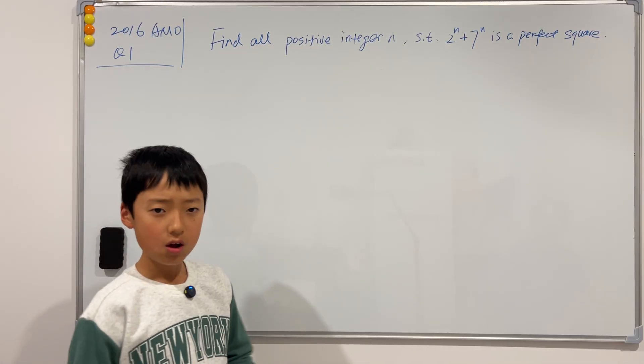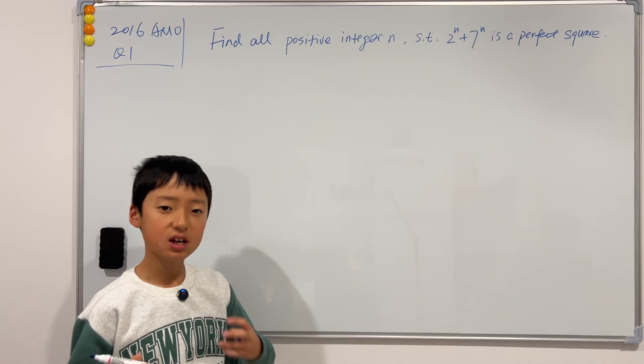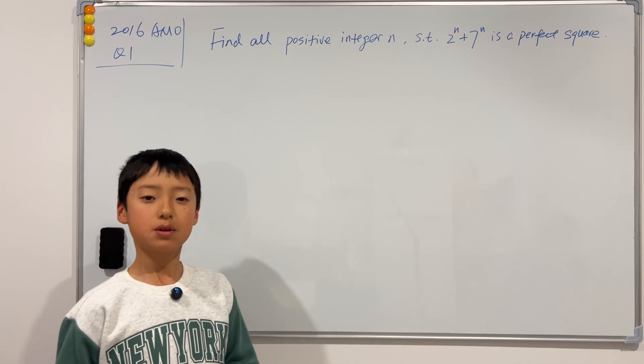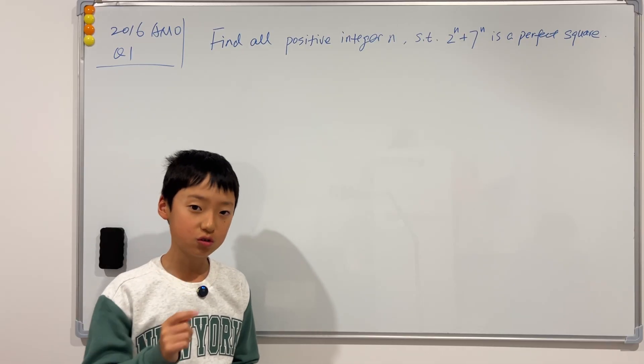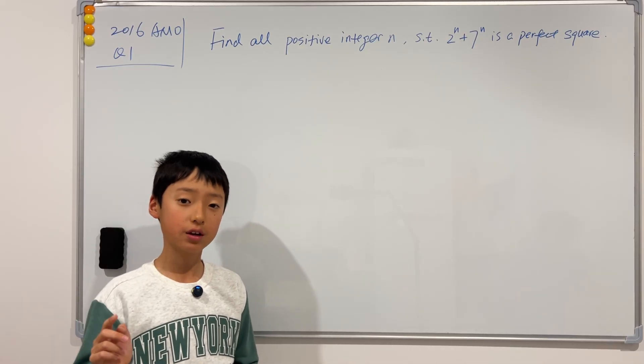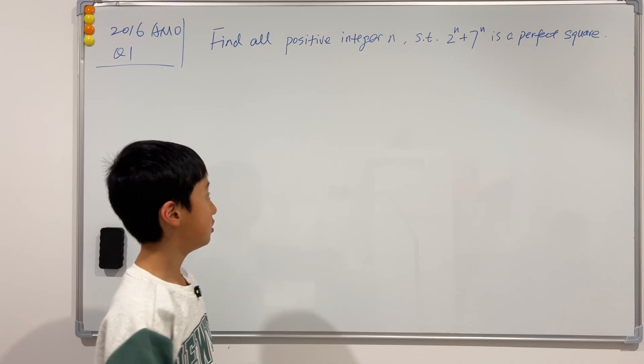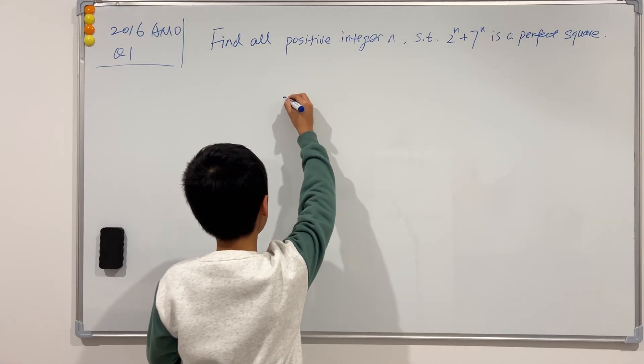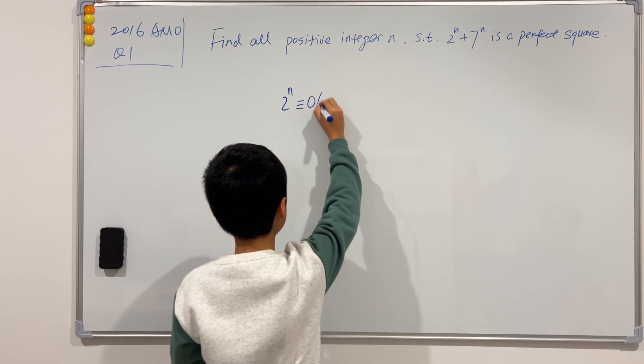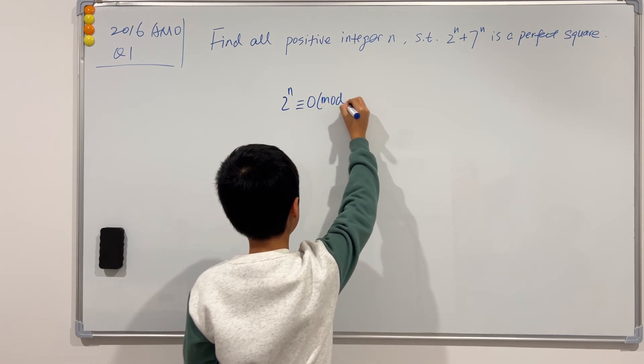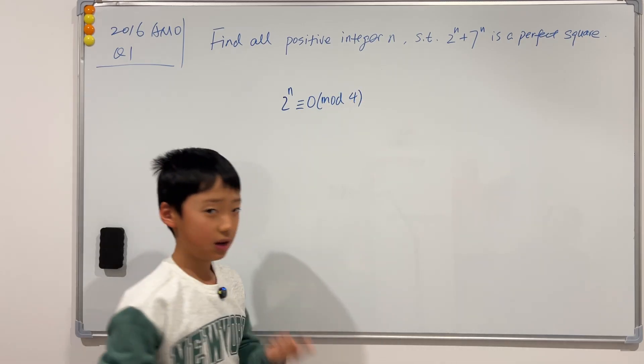Now, for perfect squares, we usually consider mod 4. Because a perfect square has to be congruent to either 0 or 1 mod 4. So let's first see. 2 to the n, we can easily tell is congruent to 0 mod 4. Because n, like we said, is greater than 1.